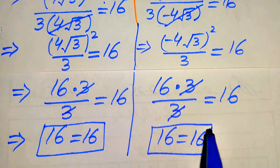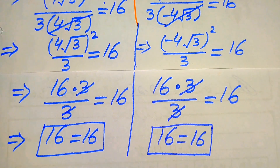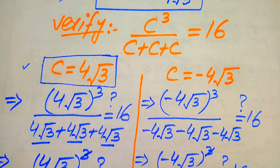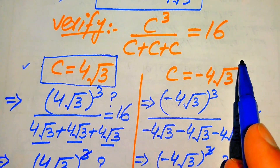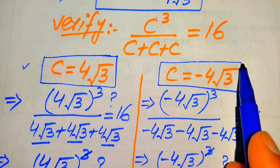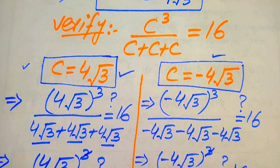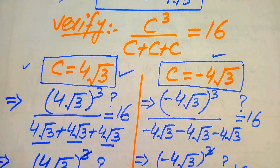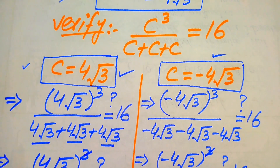This also shows that the second value of c, which is minus 4 times square root of 3, also satisfies our given equation. Therefore, these are the two solutions of the given equation. This is the final answer. Thank you so much for watching this video — please subscribe to my channel for more exciting videos.